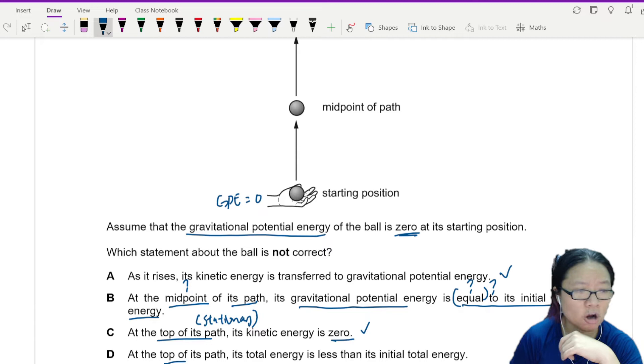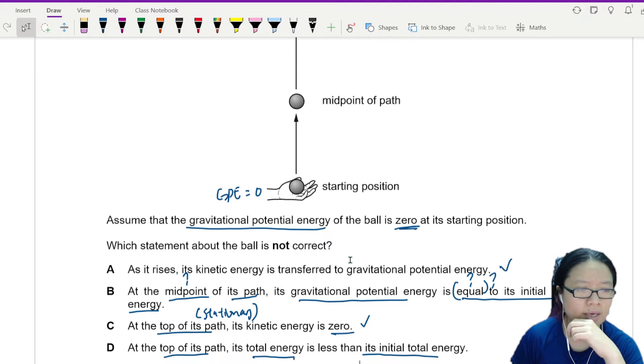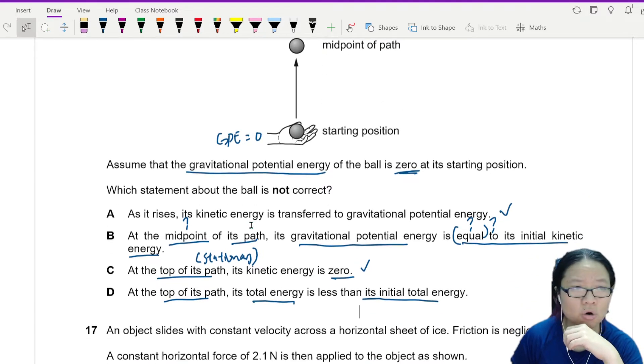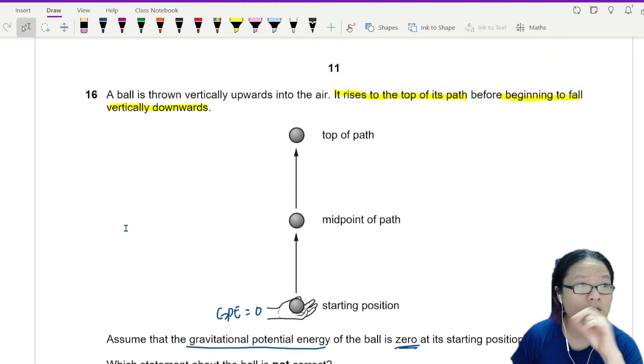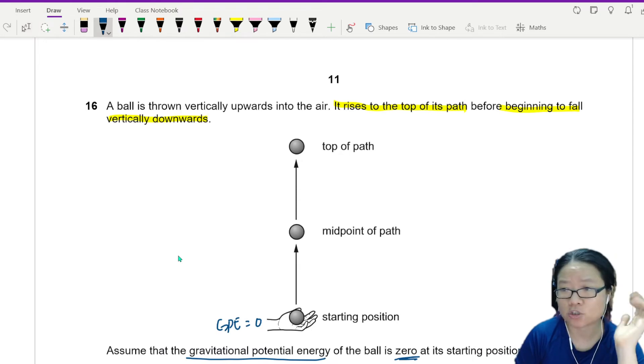At the top of its path, the total energy is less than the initial total energy. Hey, where did the energy go? You may be tempted to choose D, but chill first. I need to check whether there's friction. Let's see. This ball is thrown vertically upwards in air.